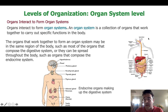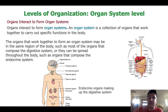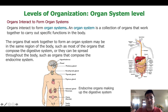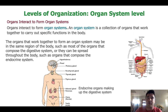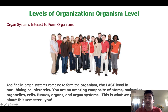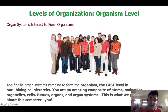Groups of organs working together to carry out common sets of functions make up organ systems. The GI tract — the gastrointestinal or digestive system — is an organ system made up of the oral cavity, esophagus, stomach, small and large intestines, liver, gallbladder, pancreas, and salivary glands. They all work together to break down food into its constituent particles like simple sugars and amino acids that can be absorbed and used by the body. Groups of organ systems working together make up an entire organism.